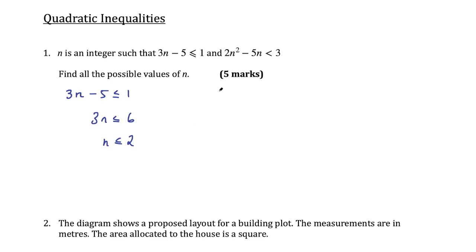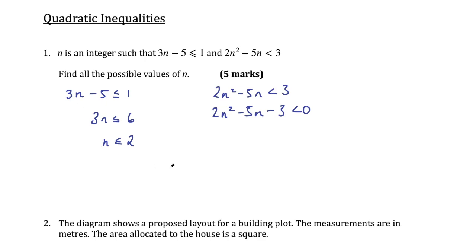Now let's look at this quadratic inequality: 2n² - 5n < 3. Firstly we want everything on the left hand side and 0 on the right hand side, as you would with a normal quadratic equation. So we'll have 2n² - 5n - 3 < 0. Now what you want to do is find your critical values — where this quadratic equation equals 0. So 2n² - 5n - 3 = 0. That's going to give my critical values, and then solve this quadratic as you normally would.